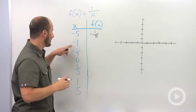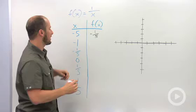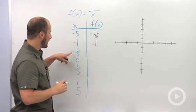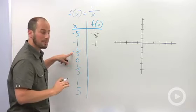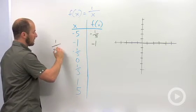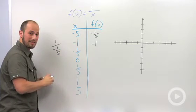When x is negative 1, one over negative 1 just cancels out to negative 1. Negative one-fifth - this one's a little more complicated. If we plug in negative one-fifth, we get one over negative one-fifth. This is a complex fraction.